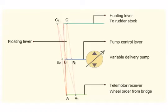After the rudder moves to midship, the hunting lever moves to C, bringing the pump control rod back to B, stopping the pump discharge.